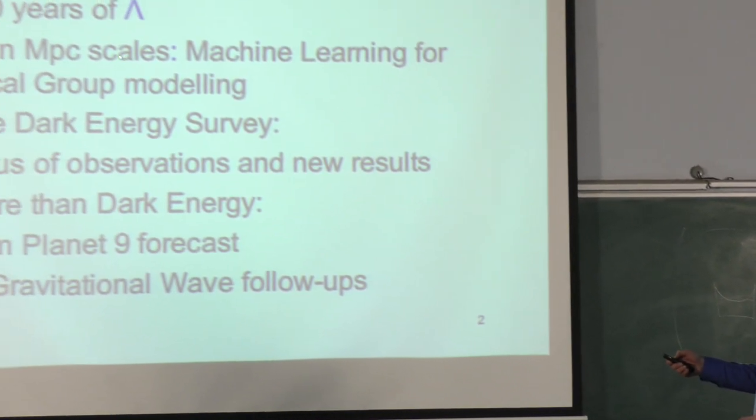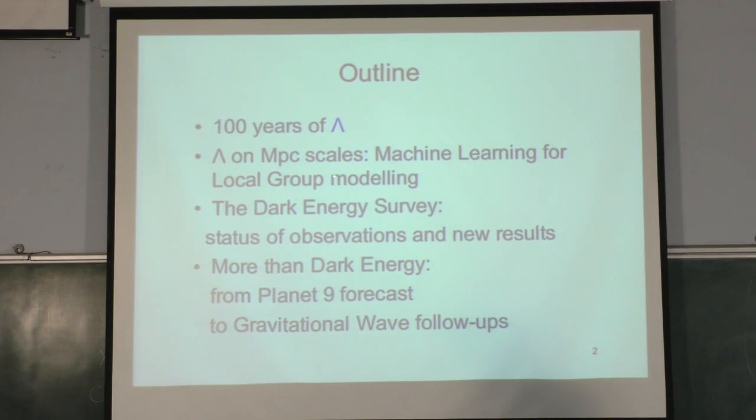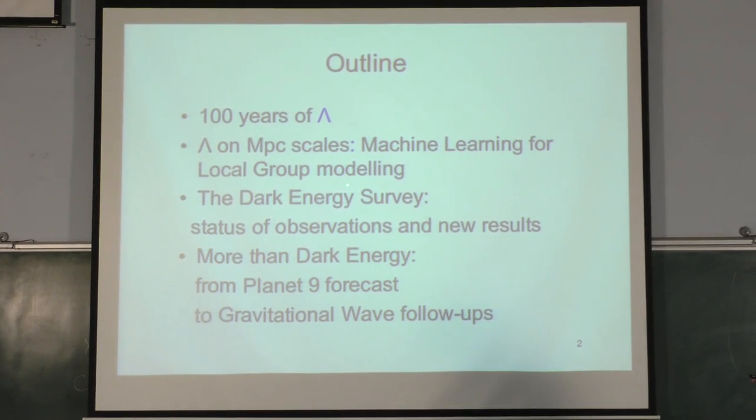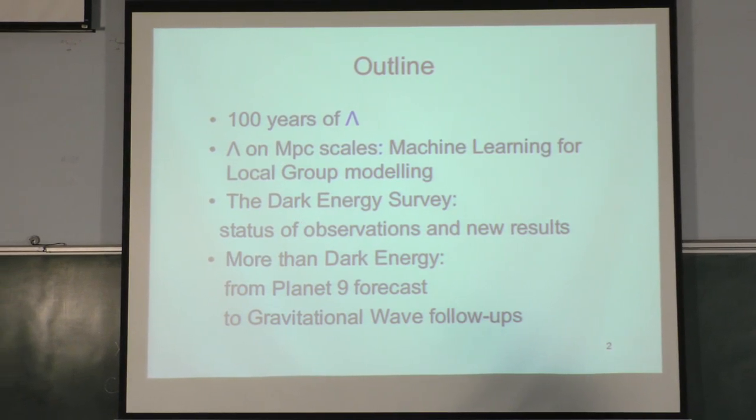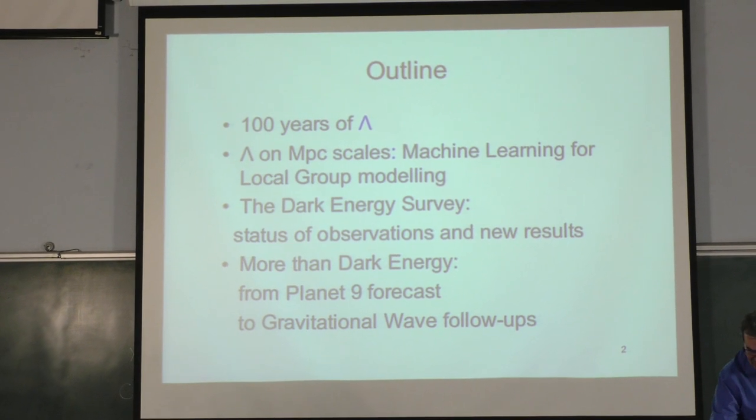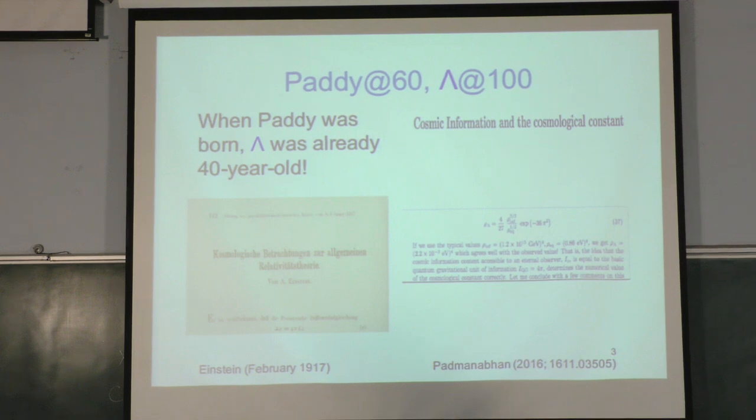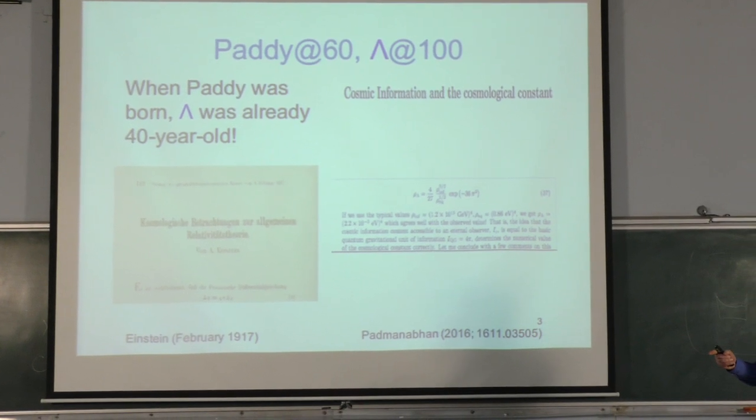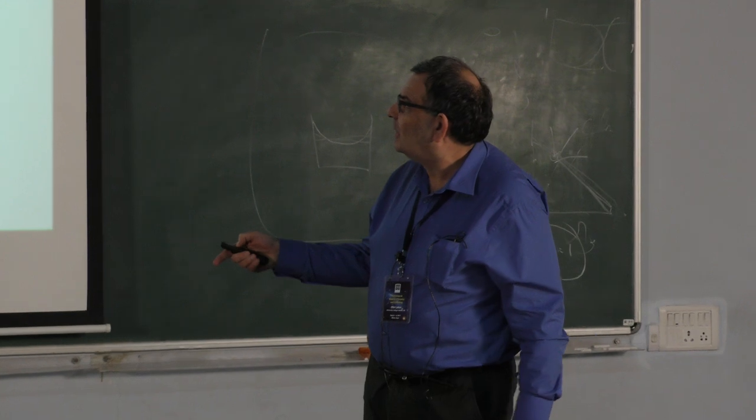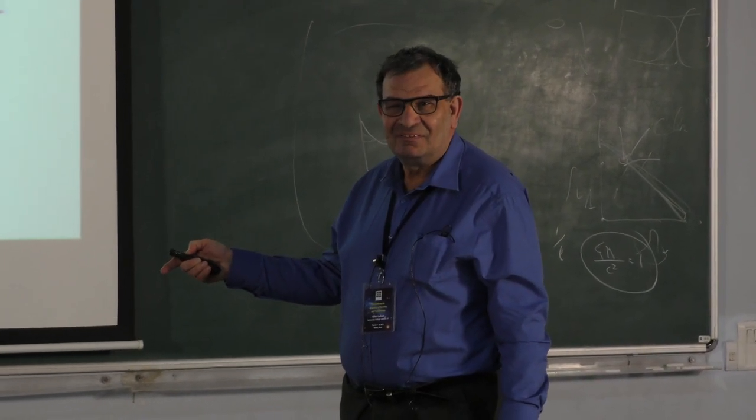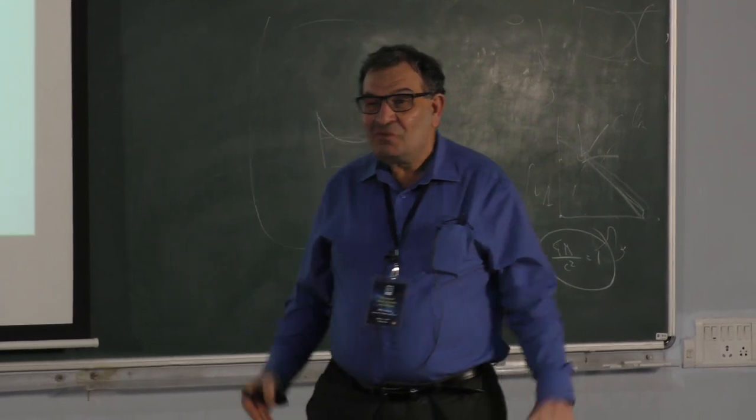So I'll talk a bit about lambda in history. Here I'll go a bit off the beaten track and illustrate that lambda can actually be measured on megaparsec scales, which is not something appreciated, I think. Then more on dark energy survey, and more than dark energy, all the way from planet 9 to gravitational wave follow-ups. So first, there's actually another anniversary, because it's not only that we're celebrating Paddy's birthday, but lambda is 100 years old, exactly. In fact, if you can see, this is Einstein's paper suggesting a static universe. And if you can read, it's February 1917. So, Paddy, when you were born, lambda has already been around for 40 years, and we still don't know what it is.